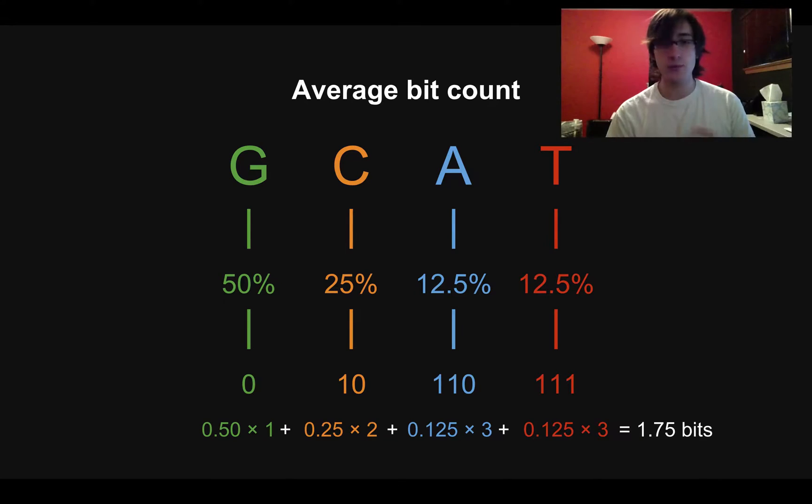And the reason we were able to do better with lumpy DNA sequences than we could with the regular DNA sequences is because we actually were able to utilize our knowledge of how frequently different things happen.